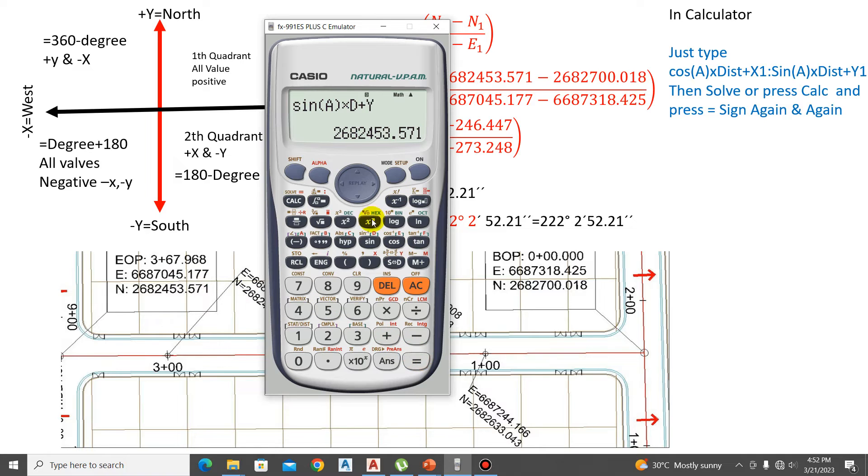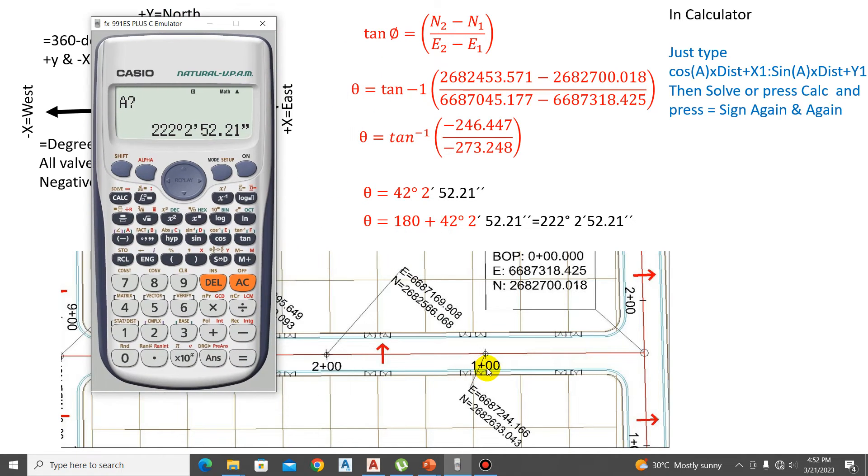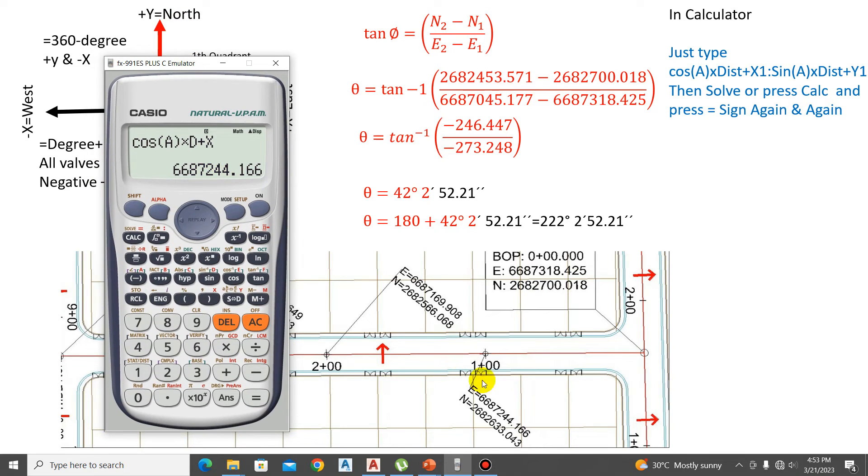Now the interval here is 100 feet. We just type here a distance of 100 and equal. Here the first value already typed, and the coordinate you can check, the above value 244 is correct. It's correct. Now you can type again a distance of 200.